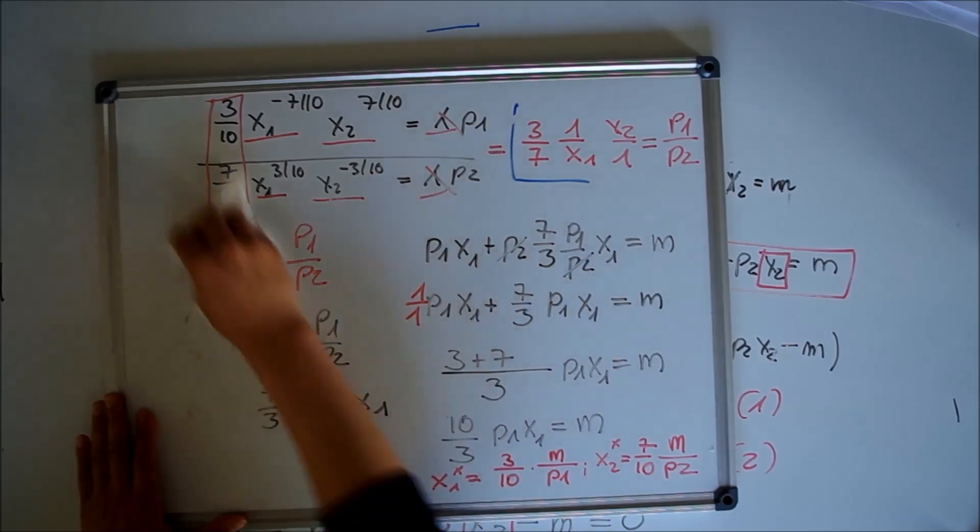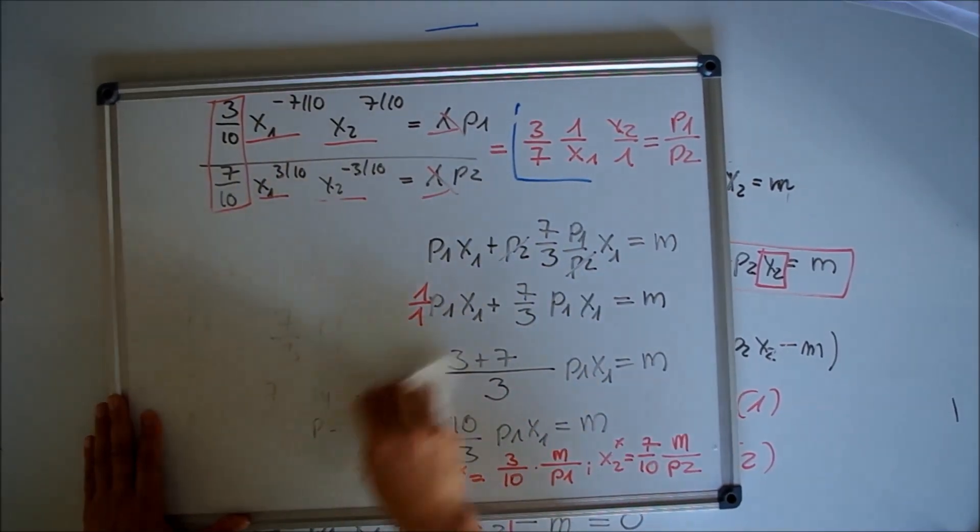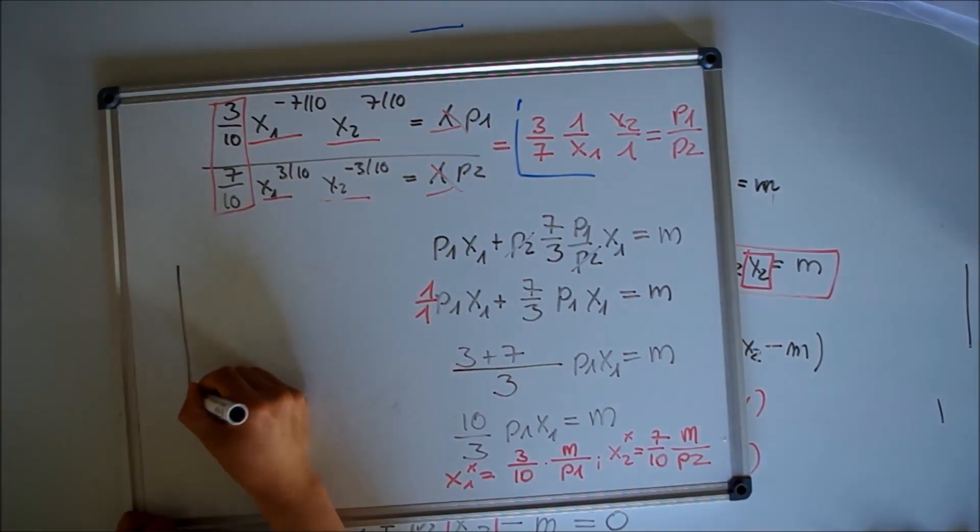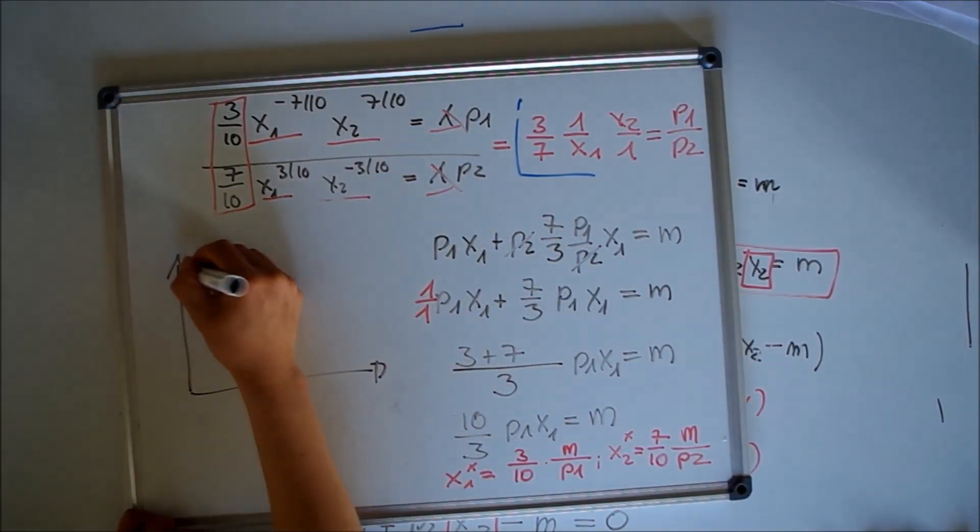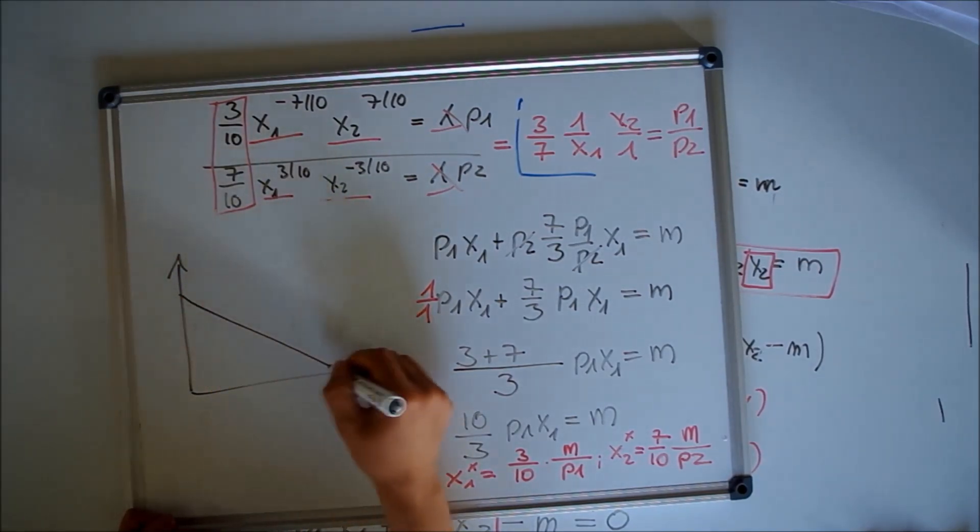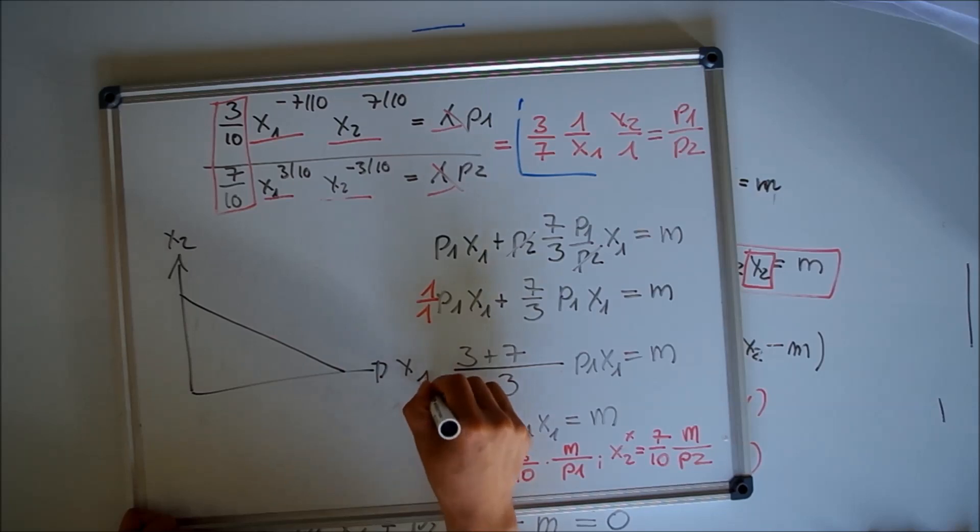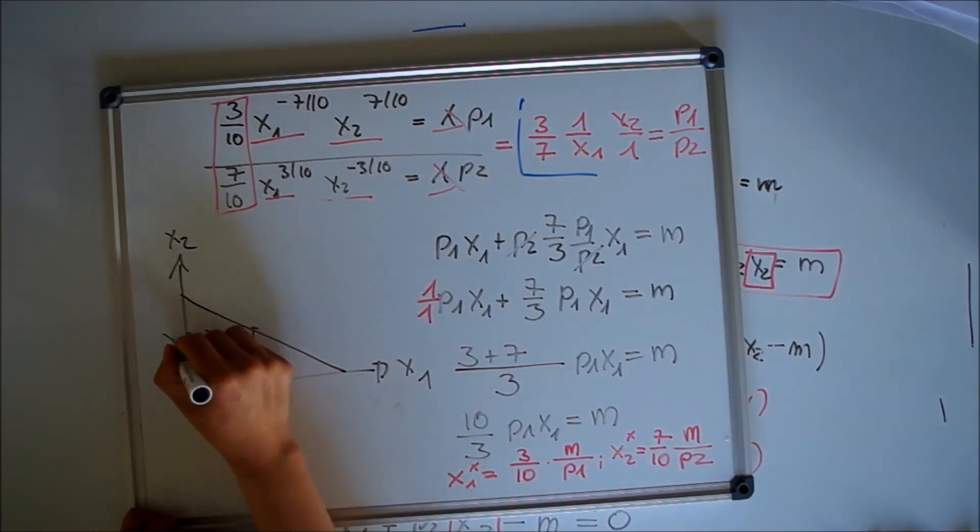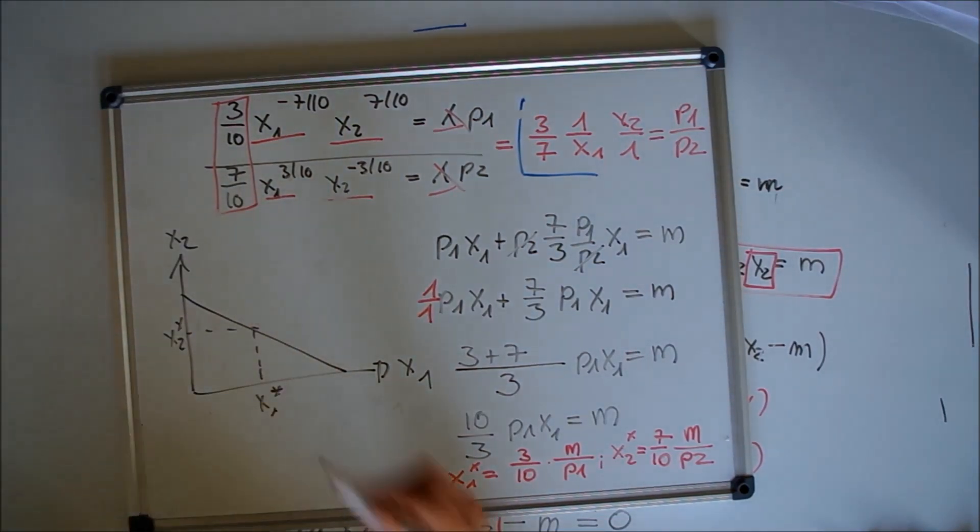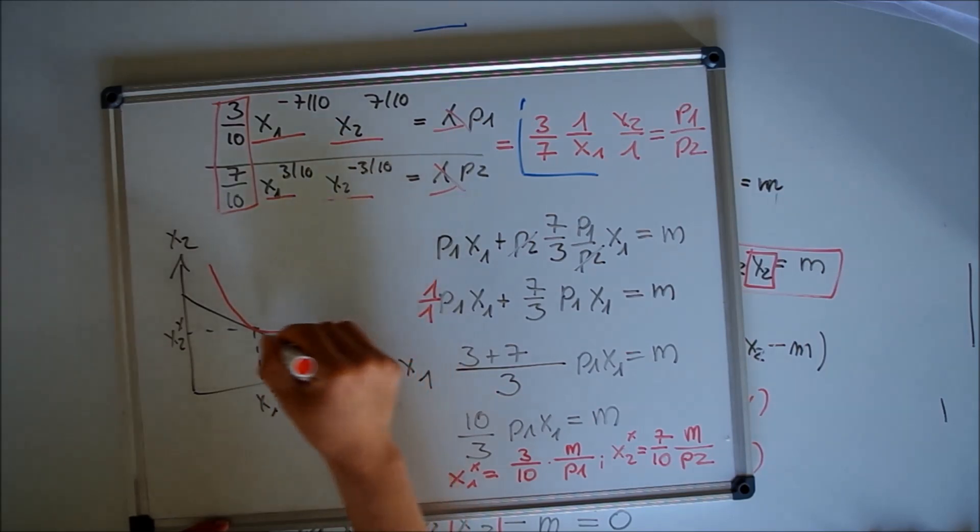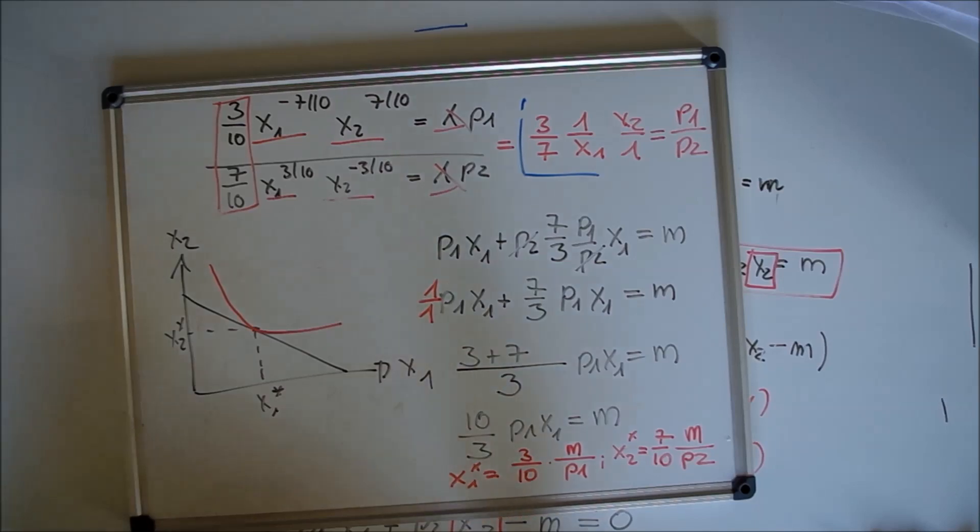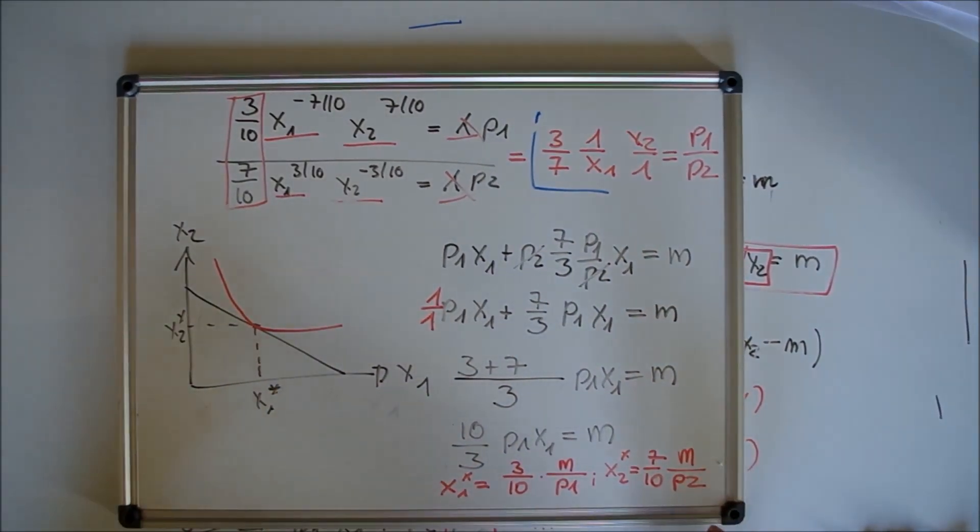If you want to see this in a graph, you draw the budget constraint, mark x1* and x2*, and at this point we have the indifference curve, which is really important to know.